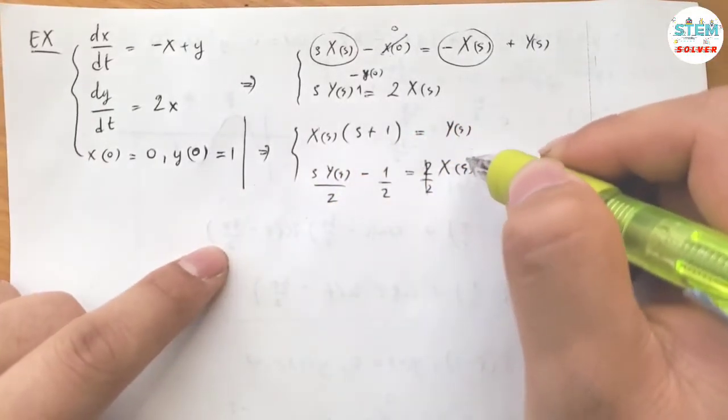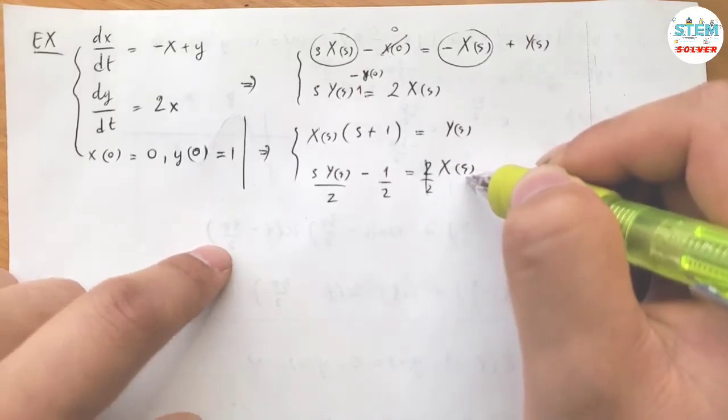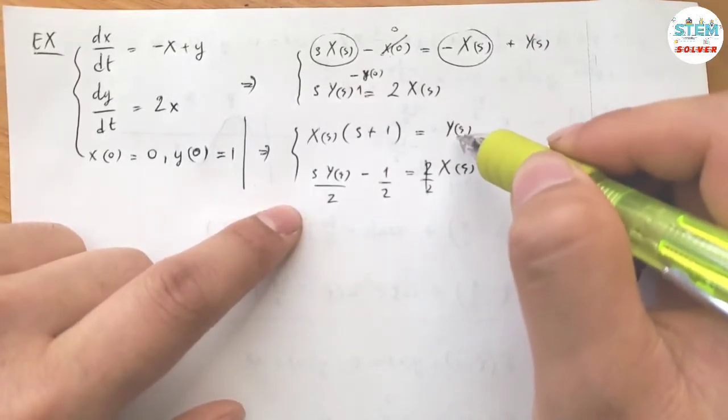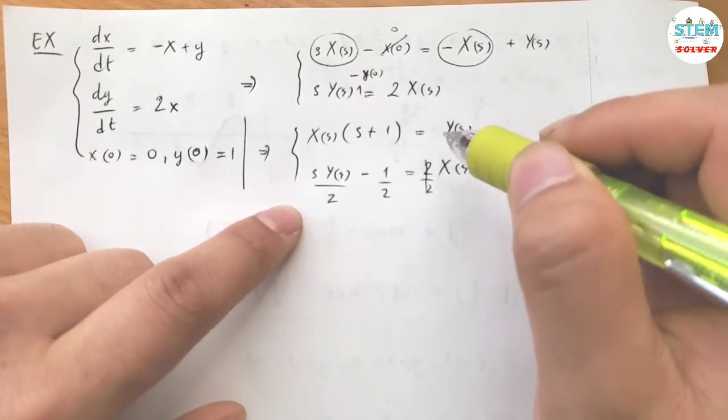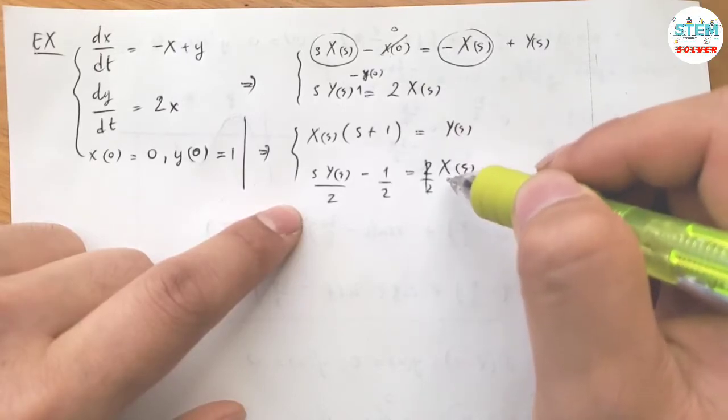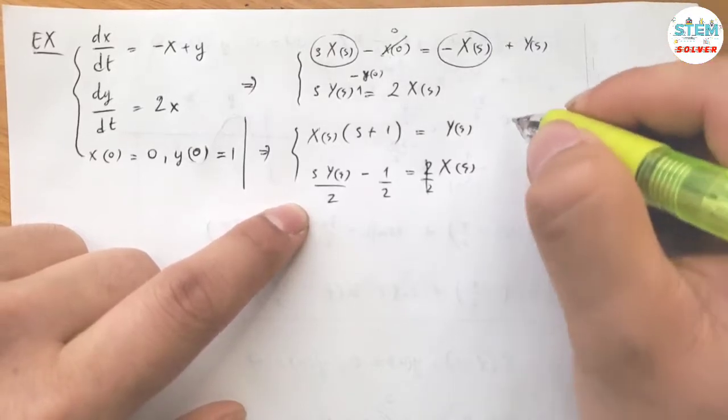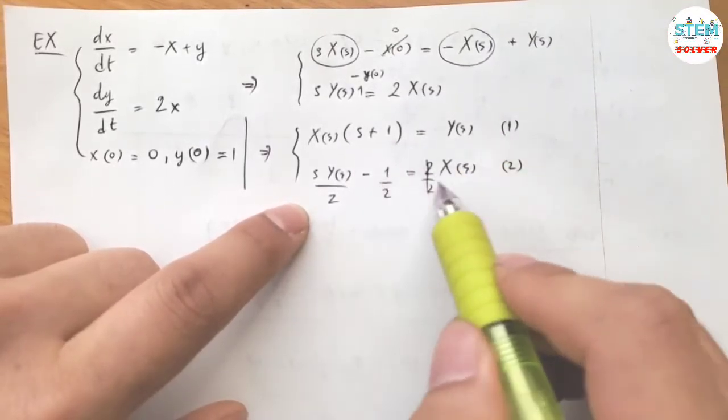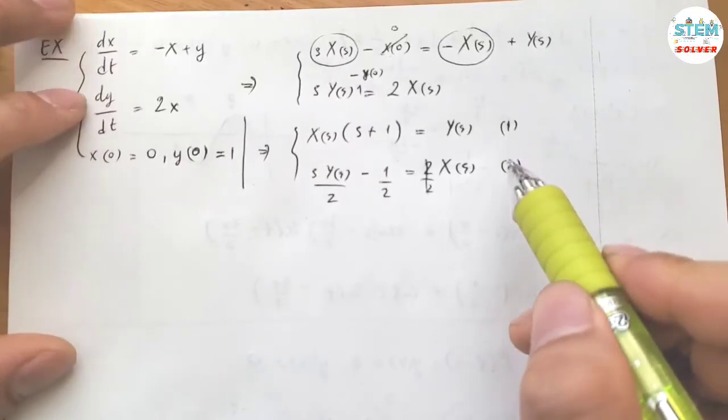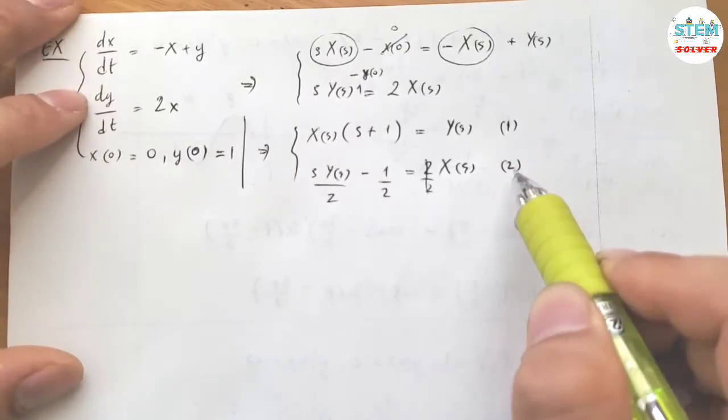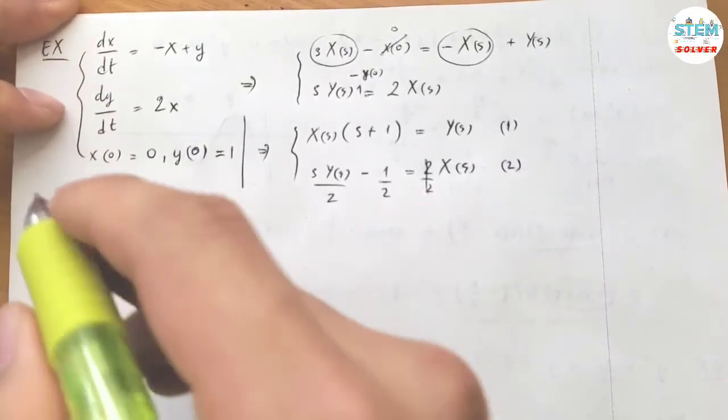Now I have X of S and Y of S and X of S. So I'm going to plug in either one of these into the other to solve the unknown and plug it back into the one I haven't used first to find the other one. So I'm going to call this equation 1 and this is 2. I'm going to plug equation 1 into equation 2.